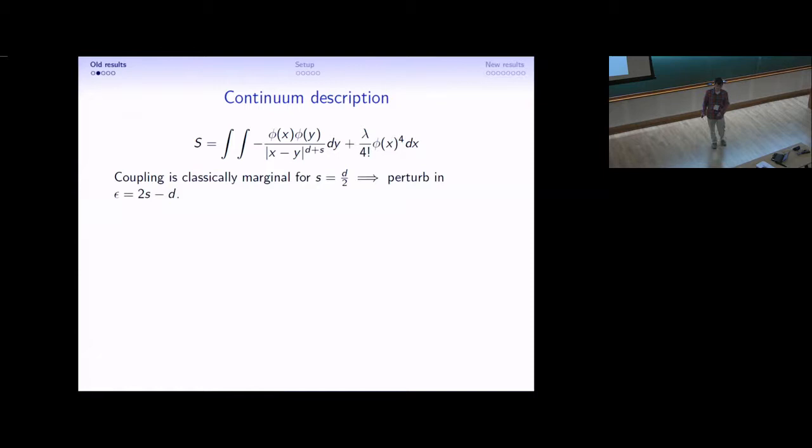As epsilon goes to zero, we expect the theory to have divergences. But one nice thing is that the divergences are local and therefore there's no way they can modify the non-local kinetic term. So a consequence is that Phi holds on to its original dimension of d minus S over 2 even at the quantum level.